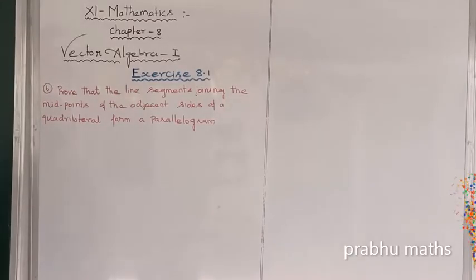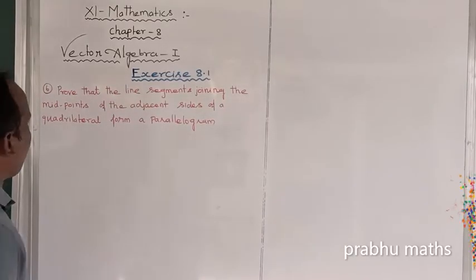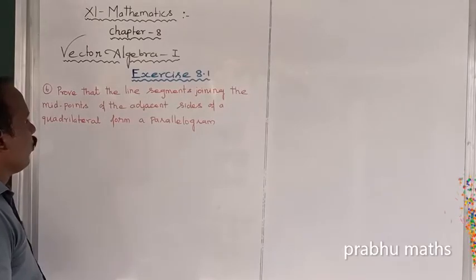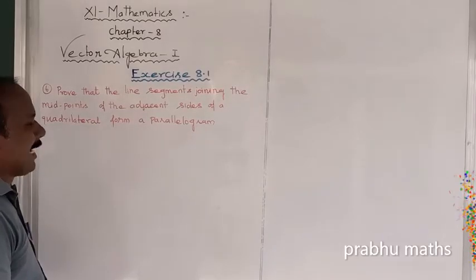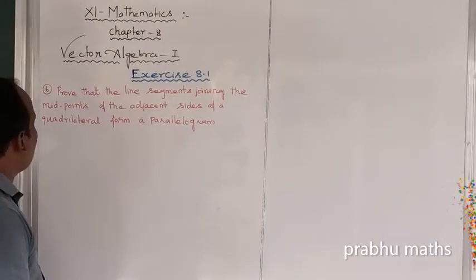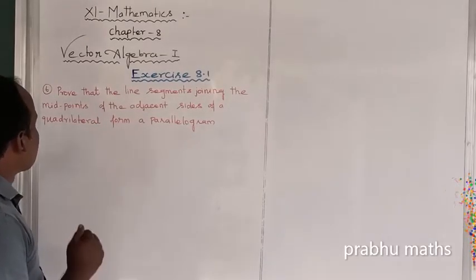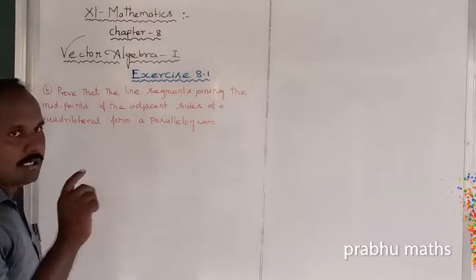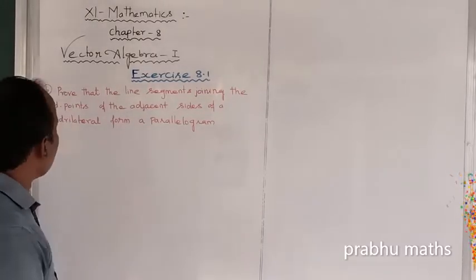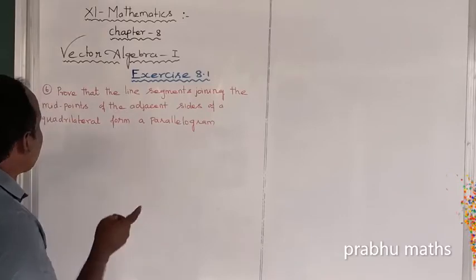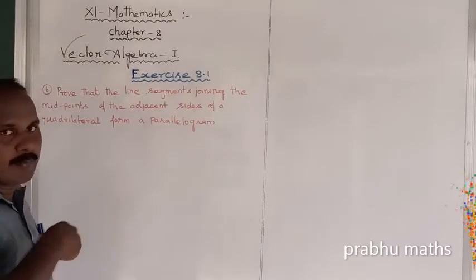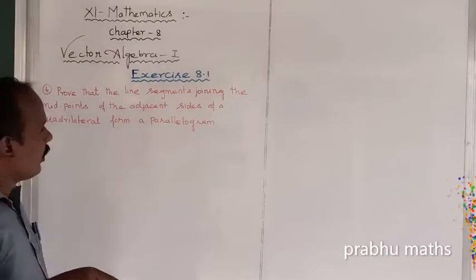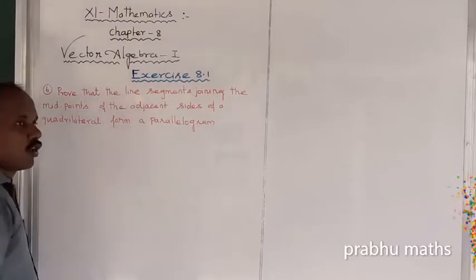Prove that the line segment joining the midpoints of the adjacent sides of a quadrilateral form a parallelogram. The connected adjacent side midpoints are called parallel, so this shape is called a parallelogram.